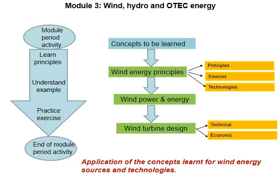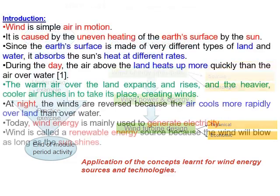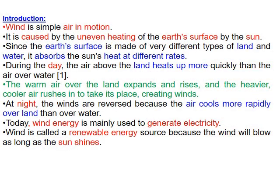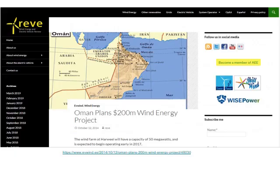Wind represents air in motion. It occurs because our planet is covered with soil and water, which differ in heat capacity. On a given day, land absorbs more heat than water and faster, so the air above it gets heated and rises because its weight reduces. The cooler, heavier air over water then moves in to take its place, creating air movement — ultimately a reflection of solar energy.